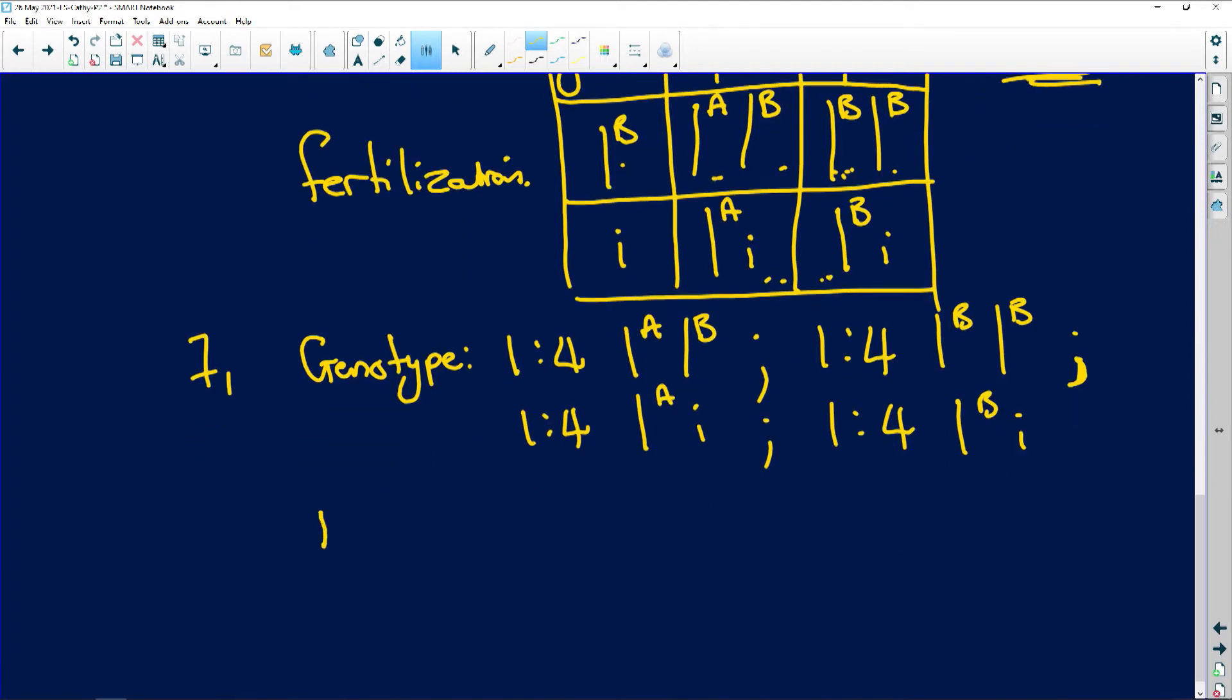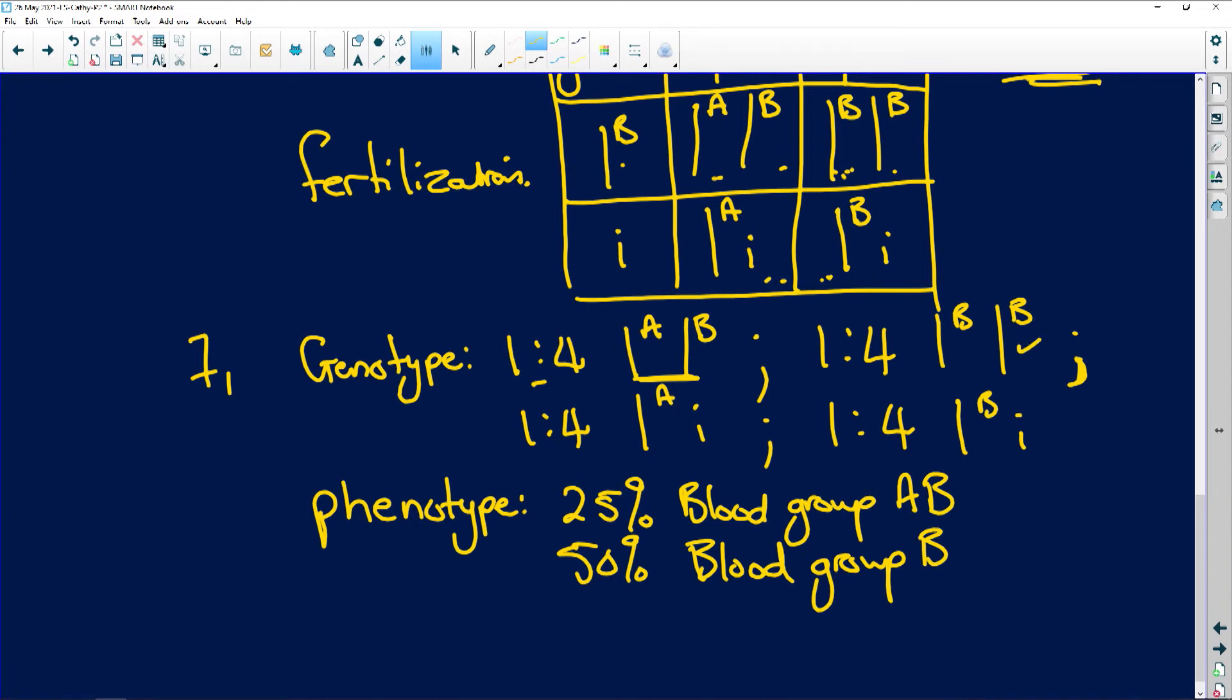So if I look at the phenotype, what is going to be expressed physically, we are going to have 25% blood group AB, and we're going to have 50% blood group B. Why? Because it's this one here, and that one there. This will be homozygous B, and that will be heterozygous B, but the phenotype is blood group B. And then the last one here is 25% chance that the offspring will be blood group A, and there you go.